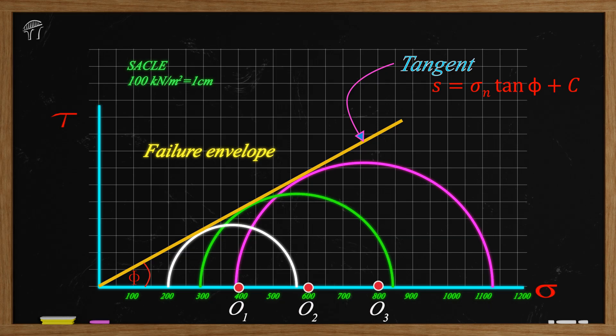For this numerical, the value of C is 0 and phi is 30 degrees. Here, the value of C is 0. So we don't need to convert it into kN per meter square but if the value of C is non-zero, don't forget to convert it into proper scale.